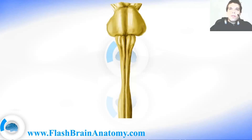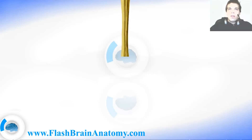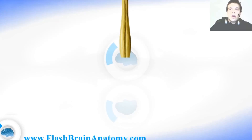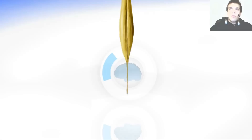Now I'll draw the thoracic spine — a relatively thin and longer part with around 12 segments. After that comes the thicker lumbar part, which consists of 5 segments. Following those are the sacral and coccygeal parts. The region where the spinal cord ends is called the medullary cone, and after that comes the terminal thread, which is approximately 20 cm long, made of fibrous tissue, and provides longitudinal support to the spinal cord.